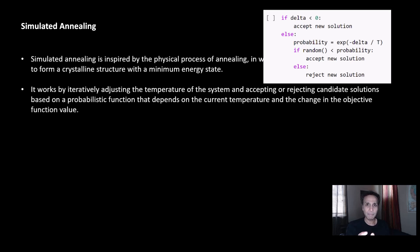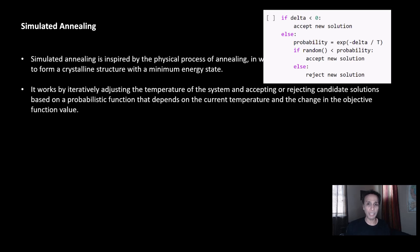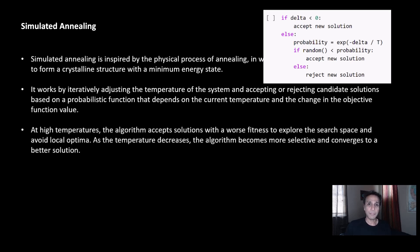In simulated annealing, we iteratively adjust the temperature of the system, accepting and rejecting candidate solutions. If the delta — the change from previous to current — is less than zero, we're heading in the right direction and we accept the solution. But if it's not optimal compared to the last iteration, instead of just rejecting it, we check the probability of accepting it. If the temperature is very high, the algorithm accepts solutions with worse fitness, because that allows us to explore the search space and avoid getting stuck in local minima.